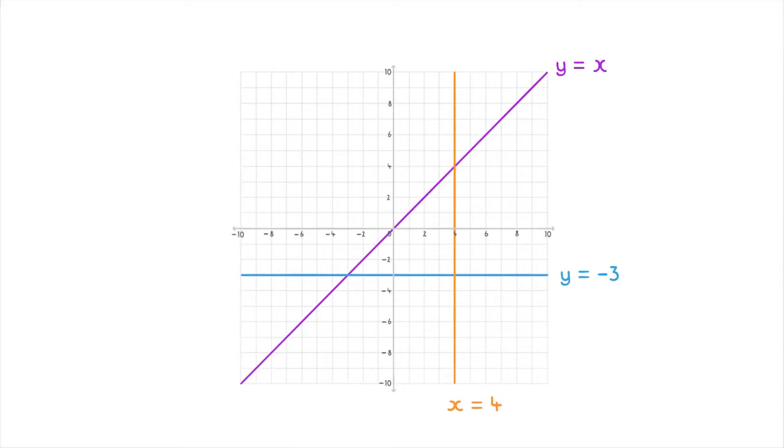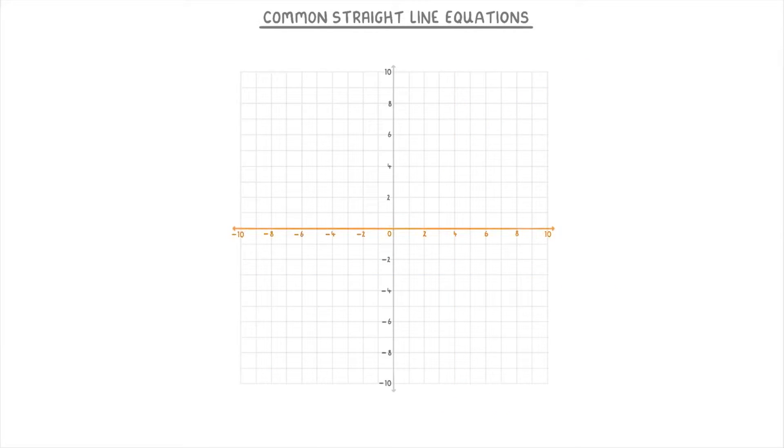In today's video, we're going to run through some of the common straight line equations that you need to be able to recognise on a graph. To quickly recap, the horizontal axis on a graph is called the x-axis, while the vertical one is called the y-axis. And on this graph, we're going from negative 10 to positive 10 on both axes.